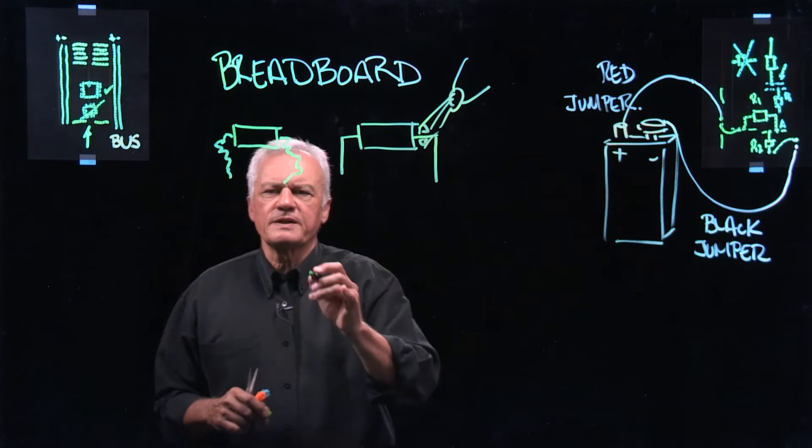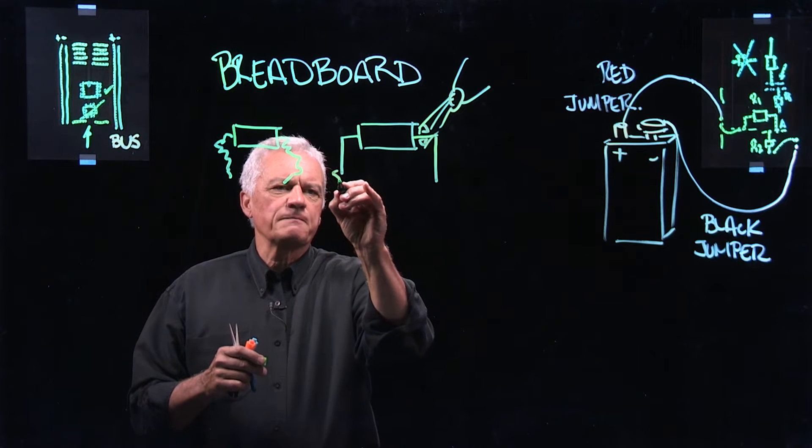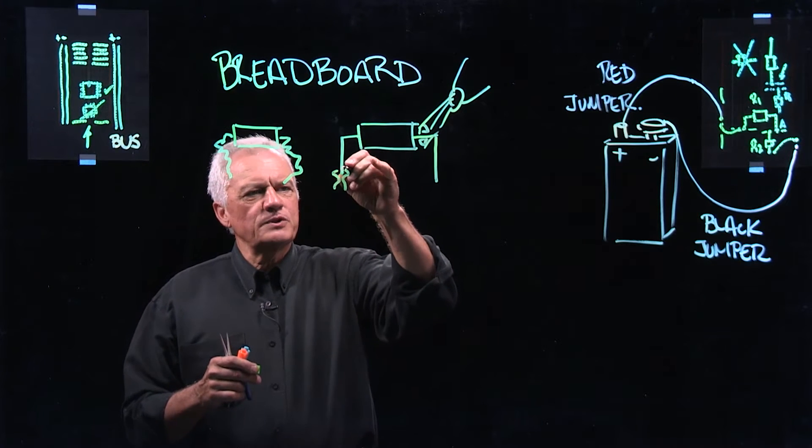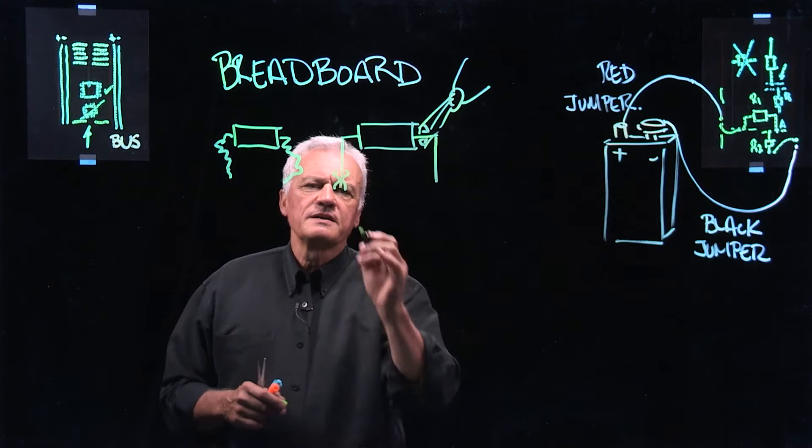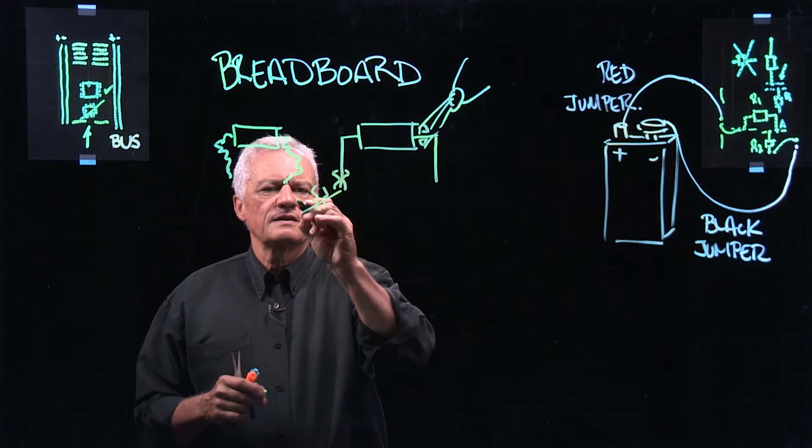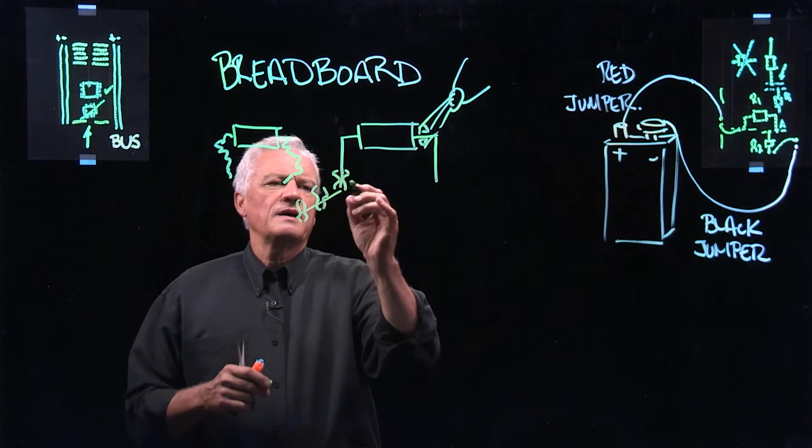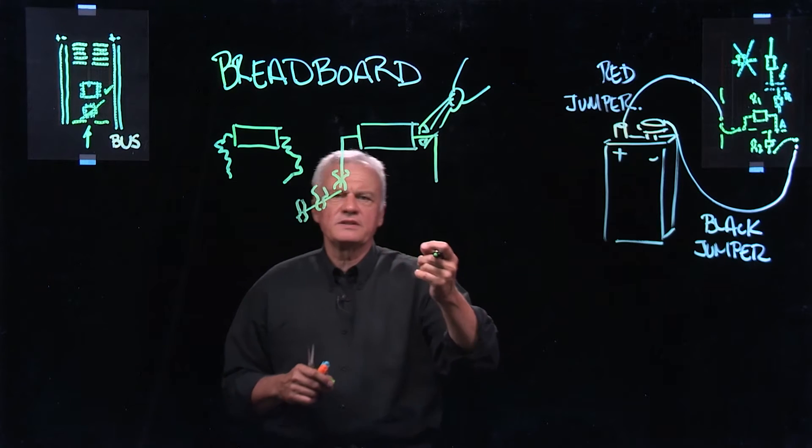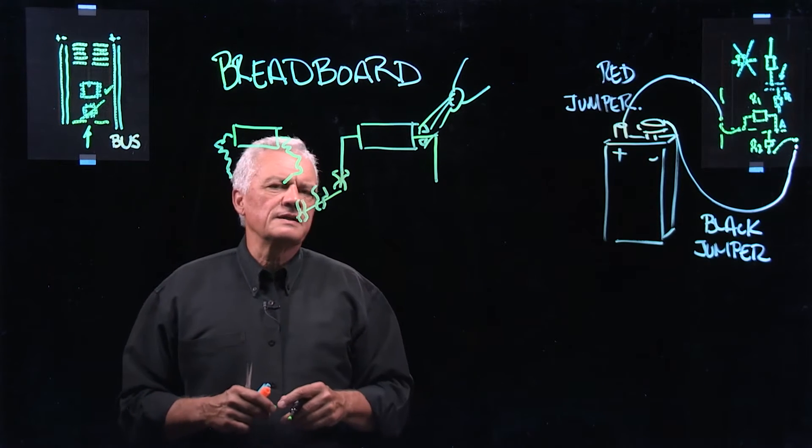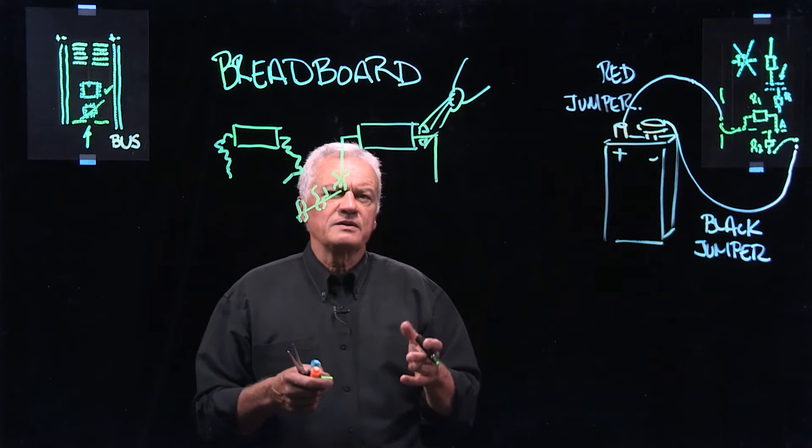It saves you from a lot of grief, because what's happening inside the breadboard is there's a spring, and you're pushing the lead into the spring to make the contact. These are all the springs that are held together throughout the breadboard. You're inserting and de-inserting a number of times, and that's why they get all squiggly, because we tend to use a lot of the same resistor values over and over.